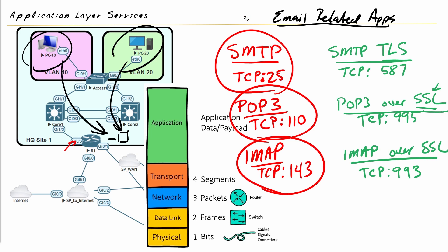The takeaways from this video: traditional email-related protocols have well-known ports, but we shouldn't use them because they are insecure — they don't encrypt data. We want to use the secure equivalents and be aware of the default server ports for all of these, in case we need to permit or deny that traffic on the network. For example, to block POP3, we can filter and stop any traffic destined for TCP 110, preventing it from being forwarded over the network.